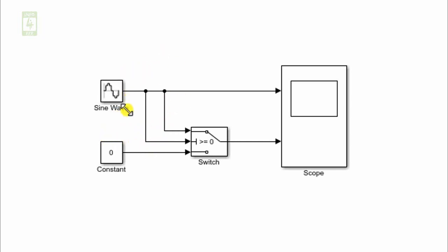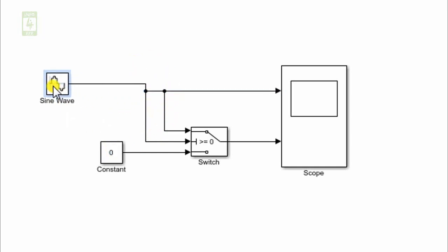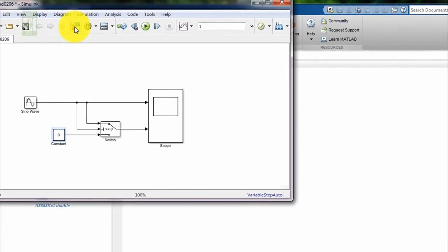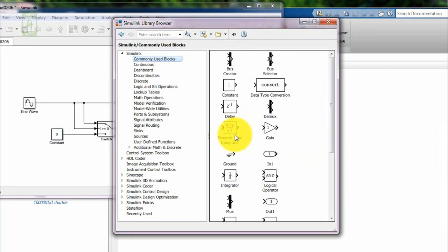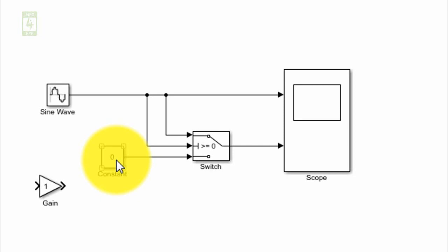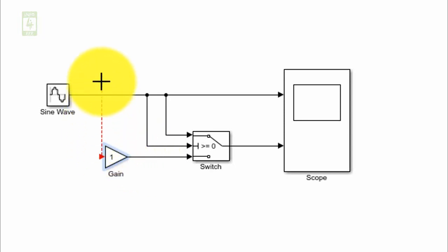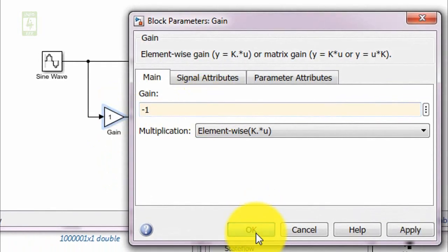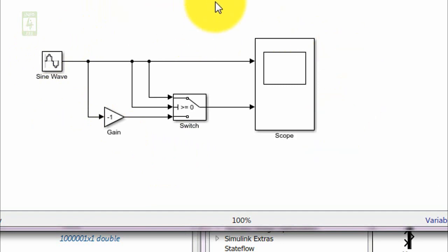The logic for the positive cycle will remain the same as in HWR waveform. This constant block will be replaced with the gain block, which will complement the negative cycle of the supply. We are copying the gain block from the library browser and replacing the constant block with the gain block. This is done — our simulation is now ready for FWR waveform.